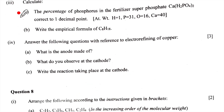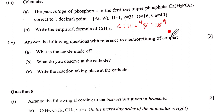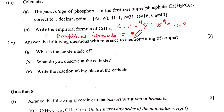Part three B: write the empirical formula of C₈H₁₈. The ratio C:H = 8:18. Dividing by 2: C:H = 4:9. Therefore the empirical formula is C₄H₉.